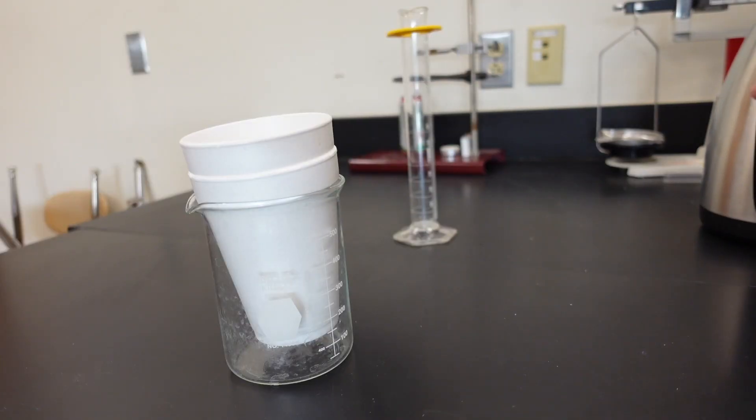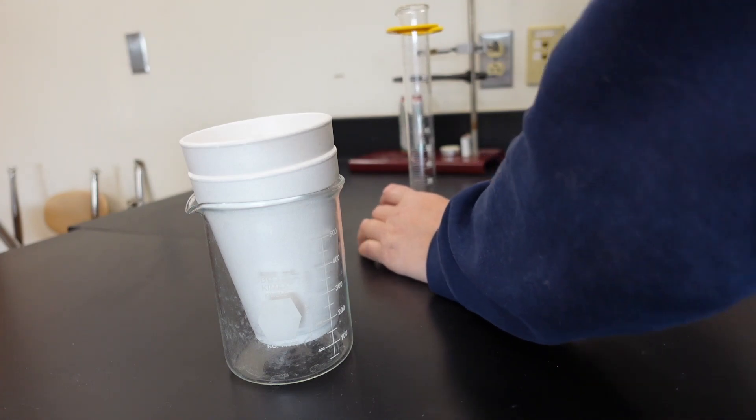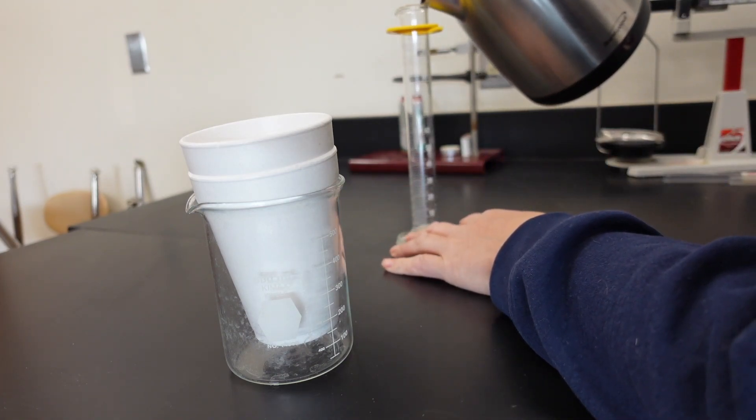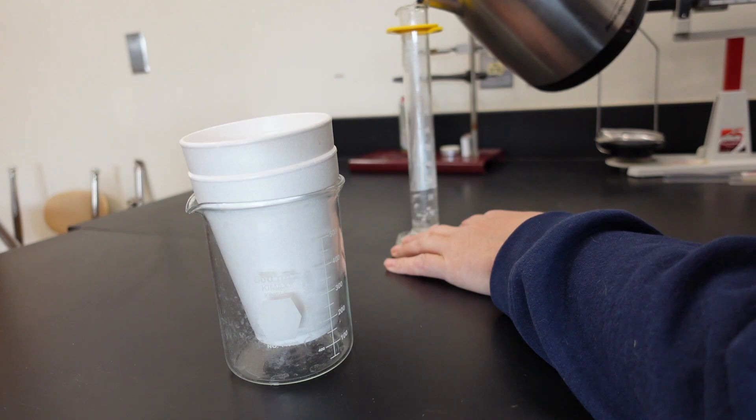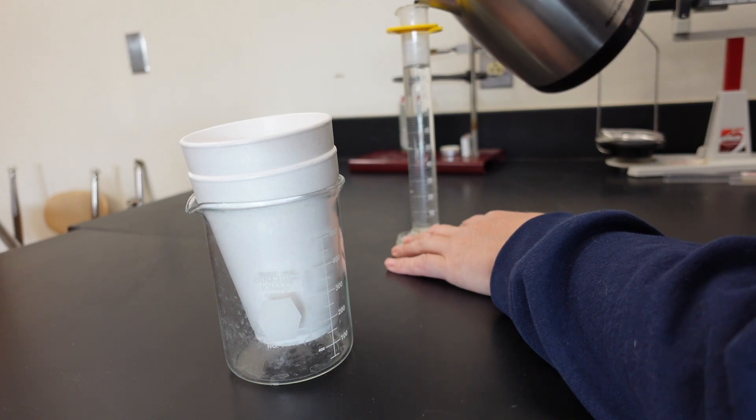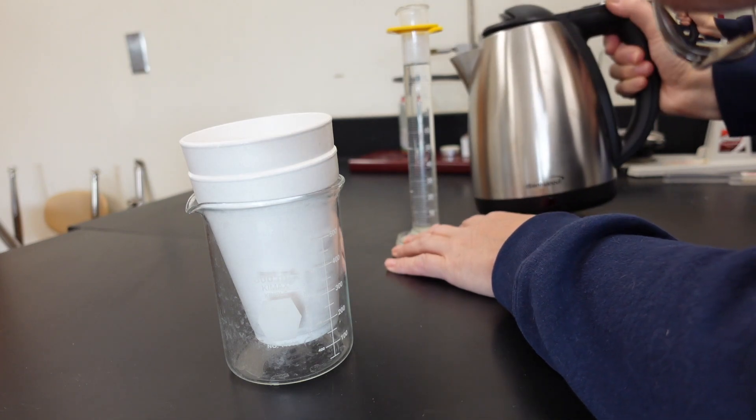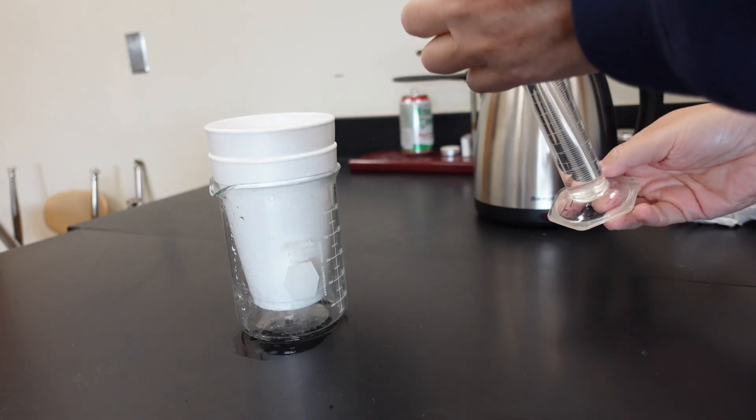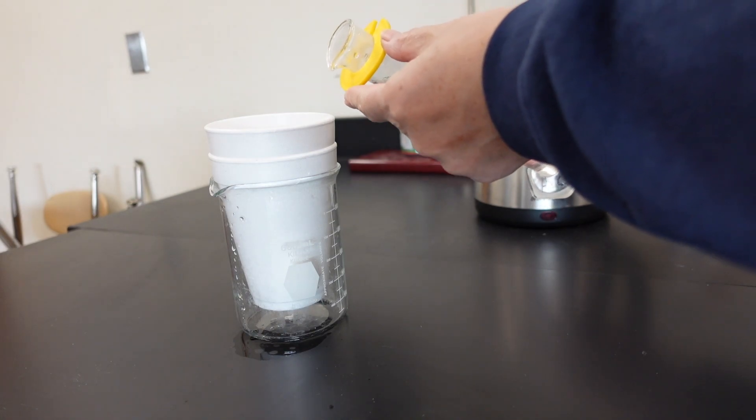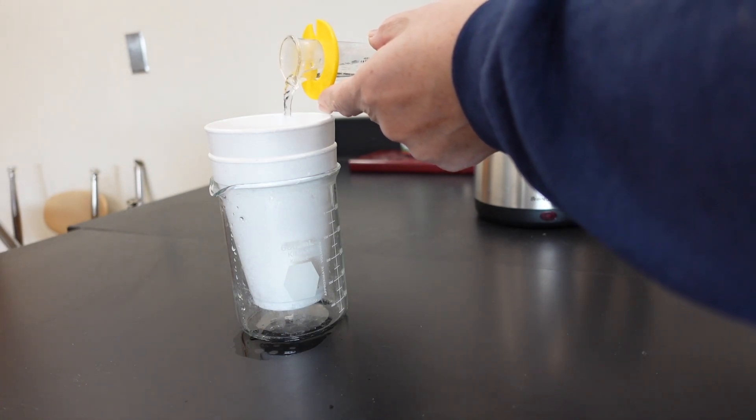Okay, so here we go. Pour out a hundred milliliters, which will weigh a hundred grams. Because this graduated cylinder is measured to the ones place, we can actually take it to the nearest ten. Here we go, 100 milliliters of hot water.